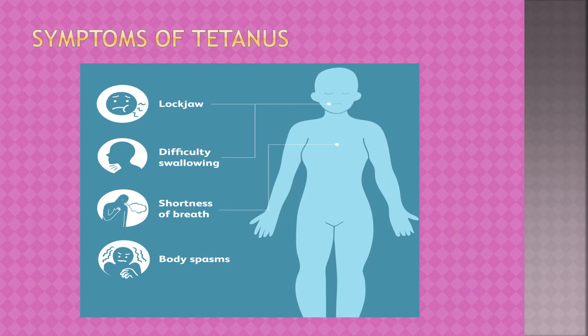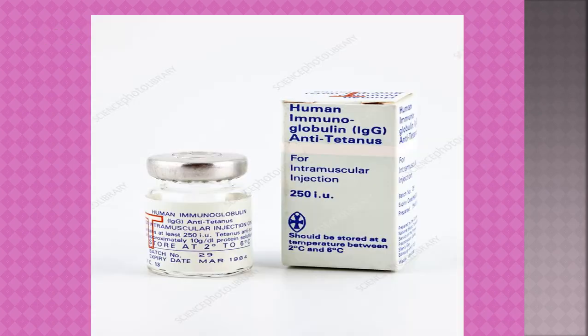Symptoms of tetanus include locked jaw, difficulty in swallowing, shortness of breath, and body spasms — it affects the nervous system and muscles. These are the symptoms caused by the bacterium Clostridium tetani. Human anti-tetanus immunoglobulin for intramuscular injection — IgG — can be administered.